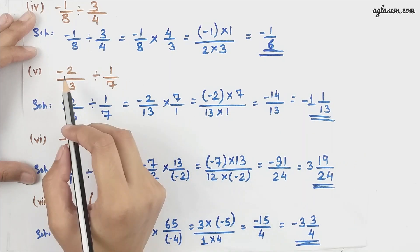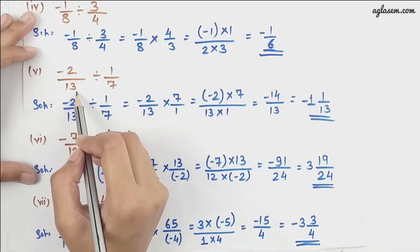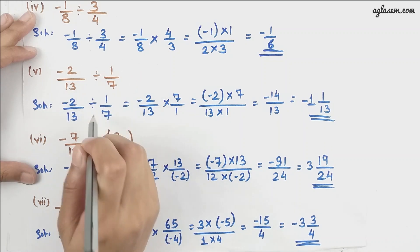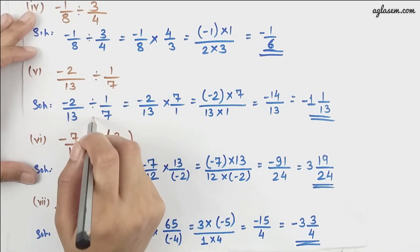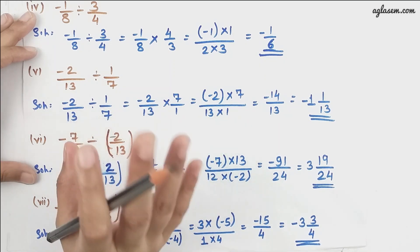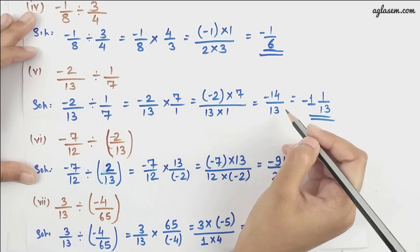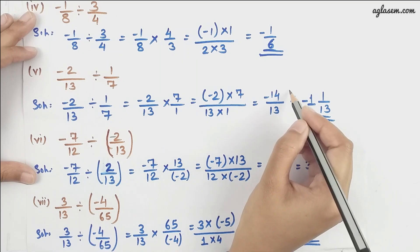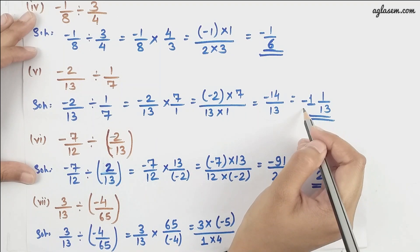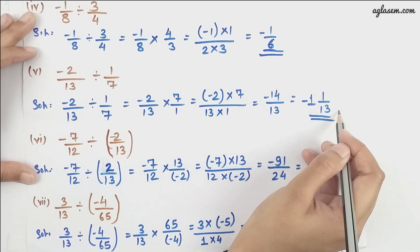Moving further, we have -2/13 divided by 1/7. We change the sign and reciprocal the value, giving us -14/13. Converting to a mixed fraction, we have -1 1/13.